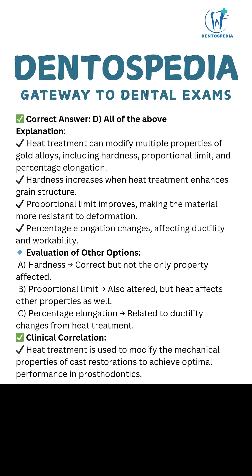Explanation: Heat treatment can modify multiple properties of gold alloys, including hardness, proportional limit, and percentage elongation. Hardness increases when heat treatment enhances grain structure. Proportional limit improves, making the material more resistant to deformation. Percentage elongation changes, affecting ductility and workability.